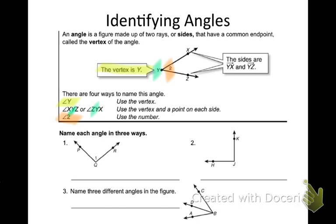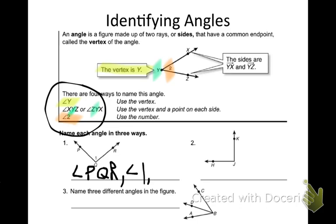So number one here — I want to name that angle in three different ways. There are actually four ways to name number one. Angle PQR is one of the acceptable forms. Angle one — yeah, it gave me a number, I'm going to use that number, it's angle one. Another one — angle Q, I can use just the vertex. The other one I could do is angle RQP — I can flip them around from the first one.